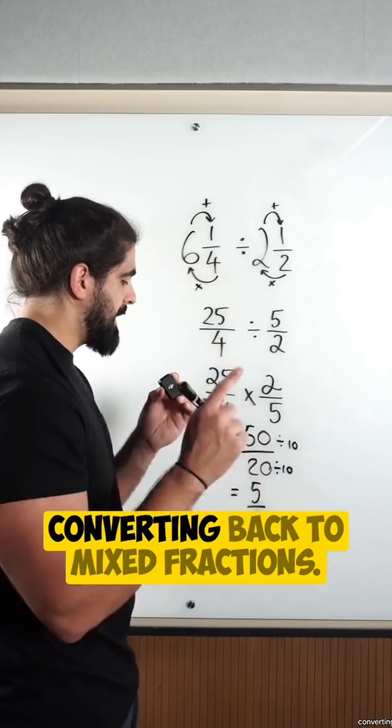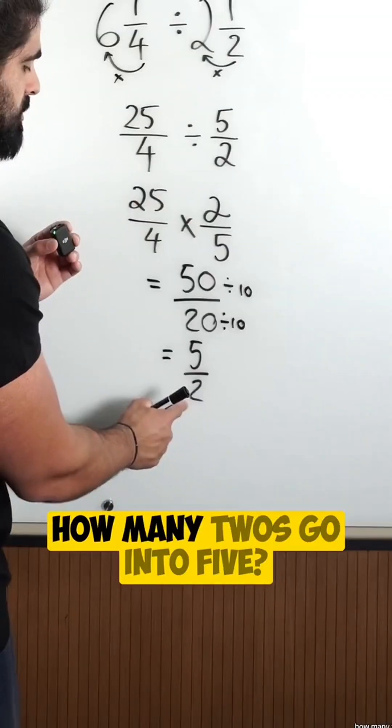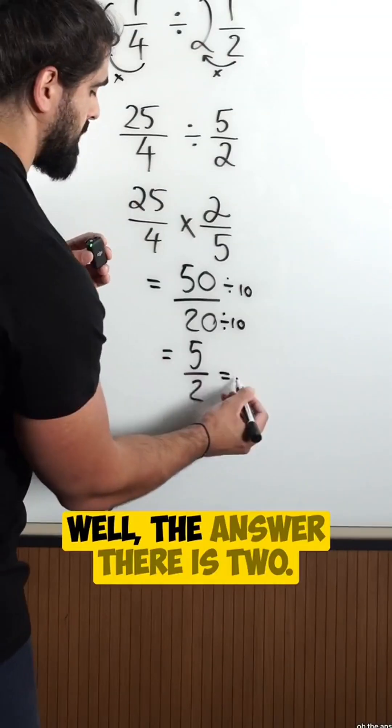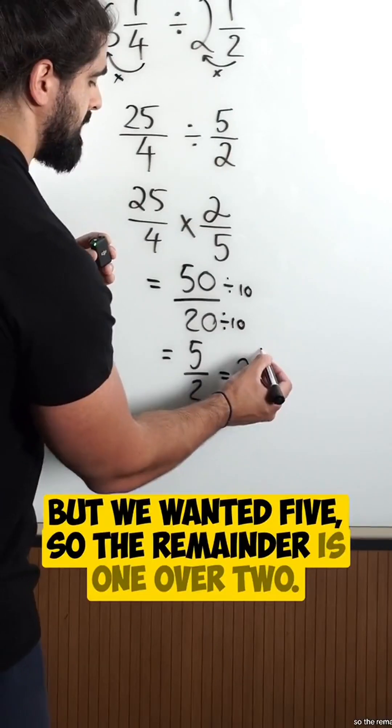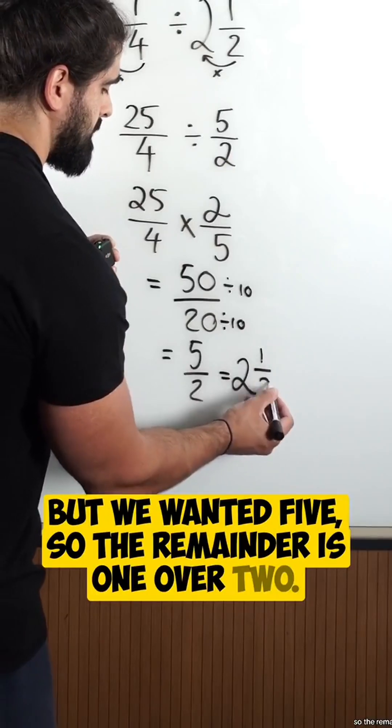It's practice again, converting back to mixed fractions. How many twos go into five? Well, the answer there is two. Two times two is four, but we wanted five. So the remainder is one over two.